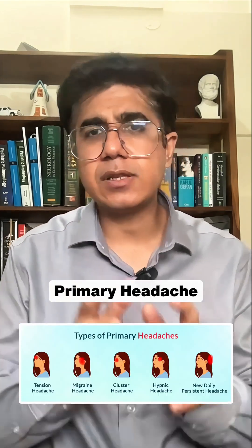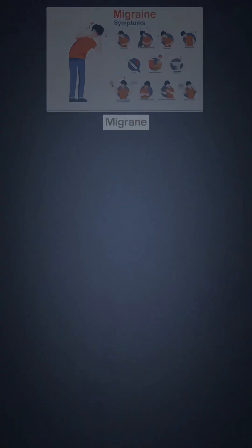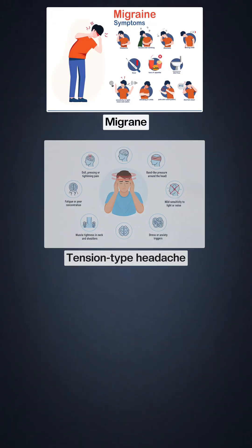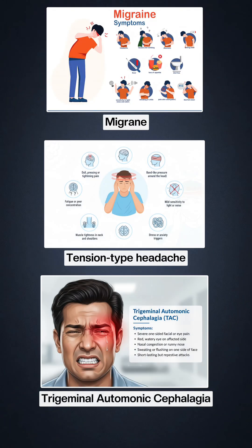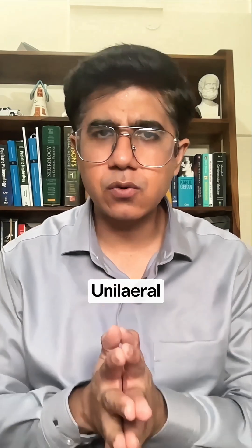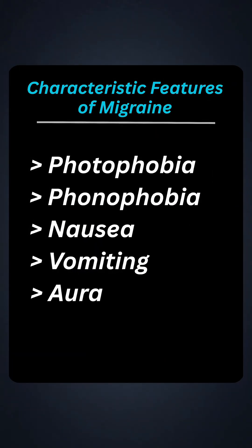Headaches, as you know, can be primary where there is no underlying pathology involved, and includes migraine, tension type headache, and trigeminal autonomic cephalalgias. In migraine, the patient usually has a unilateral or sometimes bilateral moderate to severe intensity headache with photophobia, phonophobia, nausea, vomiting, and sometimes aura also.